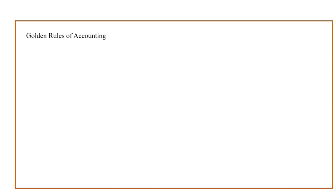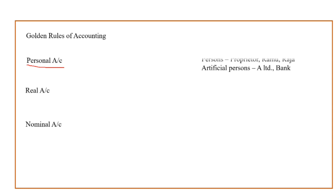We have classified accounting transactions into three types: personal account, real account, and nominal account. Transactions recorded under the personal account rule include any transaction where the name of a person is given — for example, Ramu, Raju — any name. Even the proprietor, the owner of the business, is a separate person because the business is different from its owners. His transactions will also be recorded using the personal account rule.